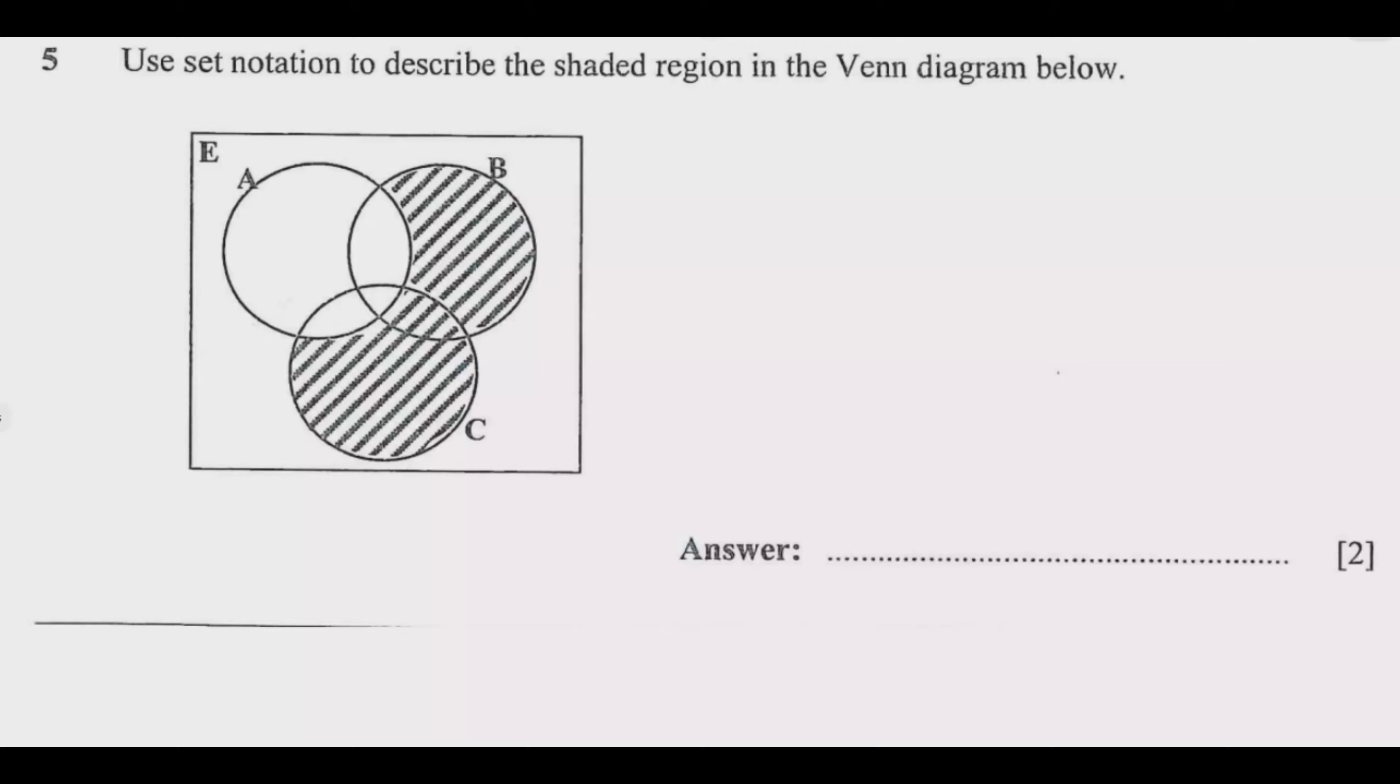This is just a matter of understanding the basic principles of set notation. The first thing that we notice is we have B union C, so B and C are there. Then we remove set A. So we have set B plus C, then we are taking out set A.